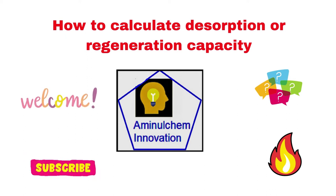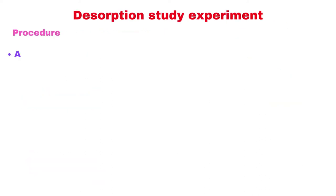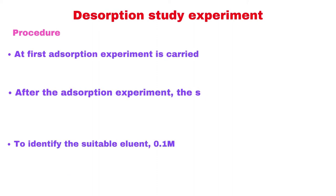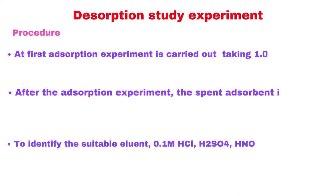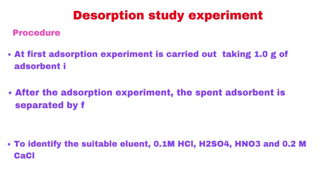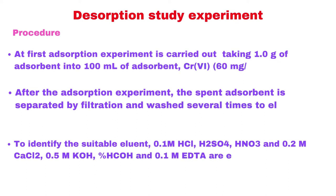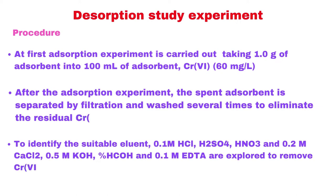Please do not skip. Let us consider the procedure. At first, an adsorption experiment is carried out taking 1 gram of adsorbent into 100 milliliters of adsorbate solution. For example, chromium, where the chromium concentration is 60 milligrams per litre.